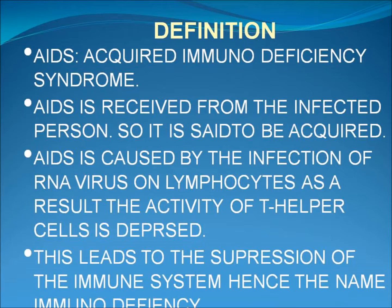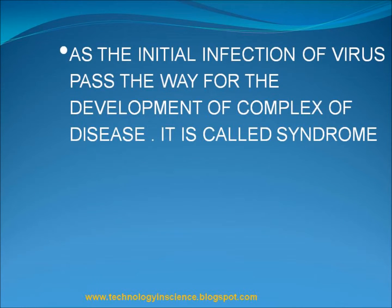AIDS is caused by the infection of an RNA virus on lymphocytes. As a result, the activity of T helper cells is depressed, leading to the suppression of the immune system — hence the name immunodeficiency. As the initial infection of the virus paves the way for the development of a complex of diseases, it is called a syndrome.